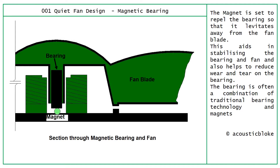The last bearing system is the magnetic bearing. A magnet is set in the bearing to repel it so that it levitates away from the fan system or motor, aiding stability and reducing wear and tear. The bearing is often a combination of traditional bearing technology and magnets; in this example the magnet is placed at the bottom to help centre the bearing as the fan spins. This technology is all about controlling wear and tear, stopping the fan from going out of balance, and reducing the creation of noise.